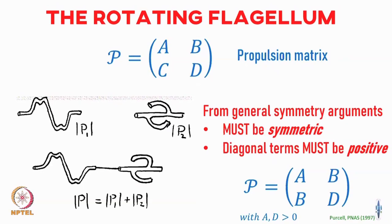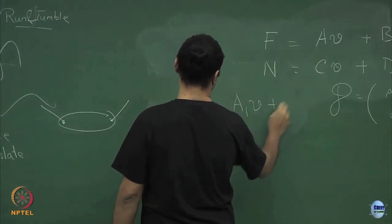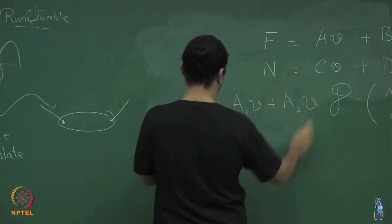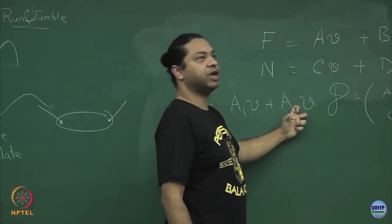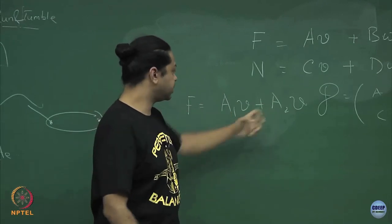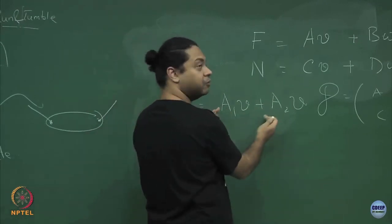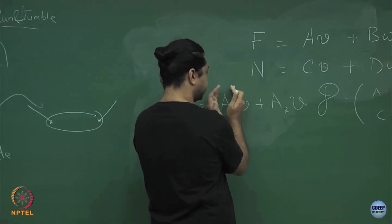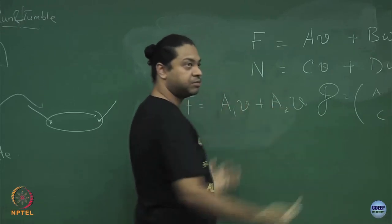For example, if there was no torque and the combined system was moving with some net velocity, the velocity would be the same for both swimmers. You would have a1·v plus a2·v — one from each propeller. You would still have a linear relationship between the force and the velocities, with the coefficient decomposed into the sum of the two propulsion matrices.